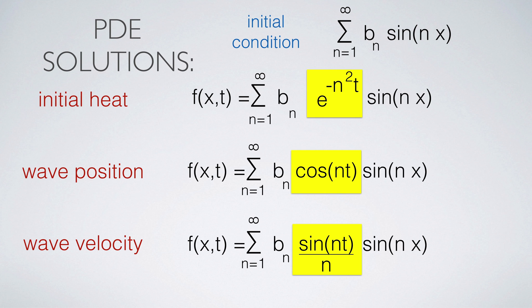You can check that if you take the derivative of the solution with respect to t and put t equal to 0, you get the initial condition.